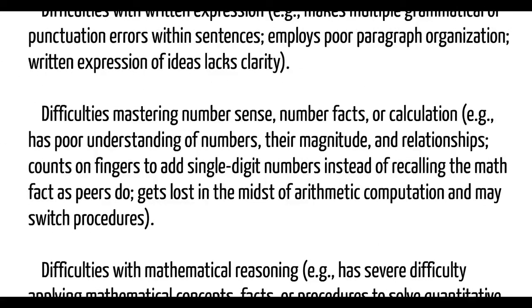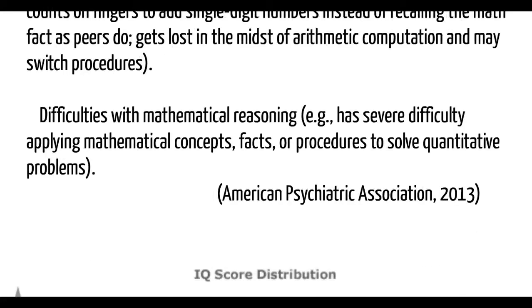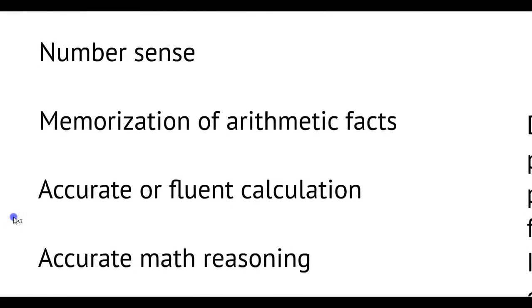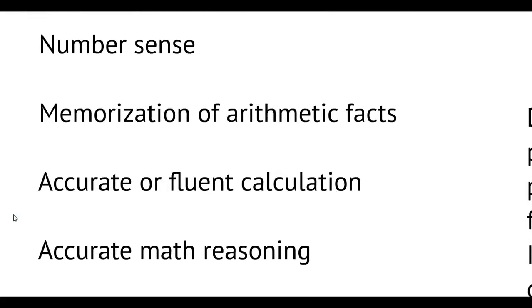The last area is difficulty mastering number sense, number facts, or calculation — like having trouble understanding numbers or magnitude of relationships. They use their fingers to add single-digit numbers instead of knowing the math fact as other kids their age would. They get lost doing mental arithmetic or might switch procedures around, like doing addition instead of subtraction. There's also difficulty with math reasoning — applying math concepts, facts, or procedures to solve quantitative problems. That's a specific learning disorder with impairment in mathematics, specifying whether it involves number sense, memorization of arithmetic facts, or accurate or fluent calculation or reasoning.